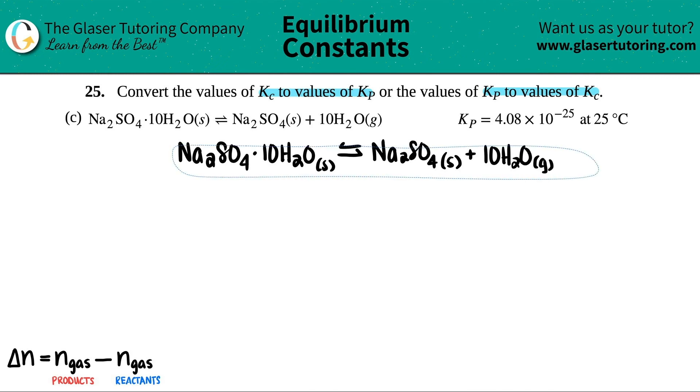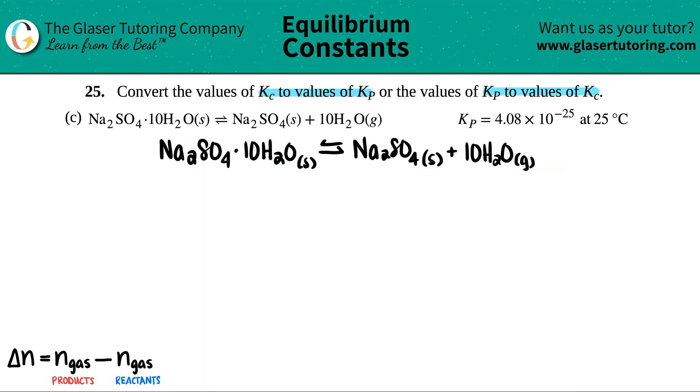So in this case, since they did give me a Kp value, all I have to do is take that Kp value and convert it into a Kc value. Well, there's only one formula that has both of these values in it. So you guys should memorize it. It's this formula right here. We'll talk about it a little bit and then we'll do the math. Kp equals Kc times RT raised to delta N gas.